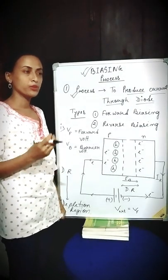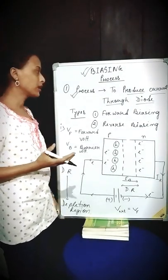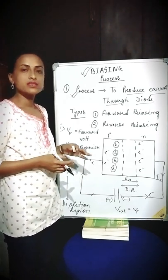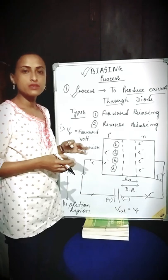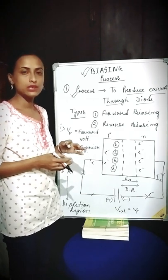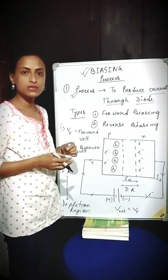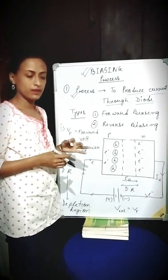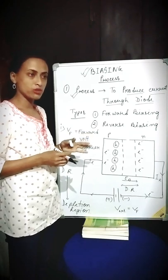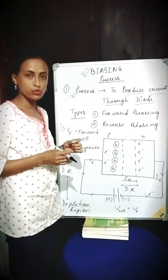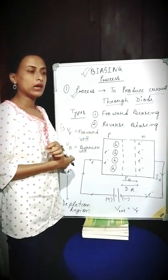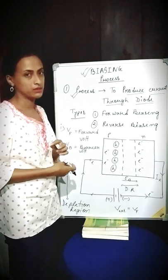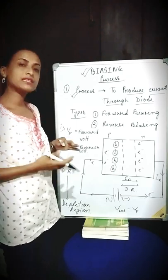Hello everyone, I'm coming back with my new video. So in this video, I'm going to discuss about the biasing process of a PN junction diode, which is included in the class 12 physics syllabus. Since this process is a very large one, I'm going to discuss it by dividing it into some parts. Now, let's get started.